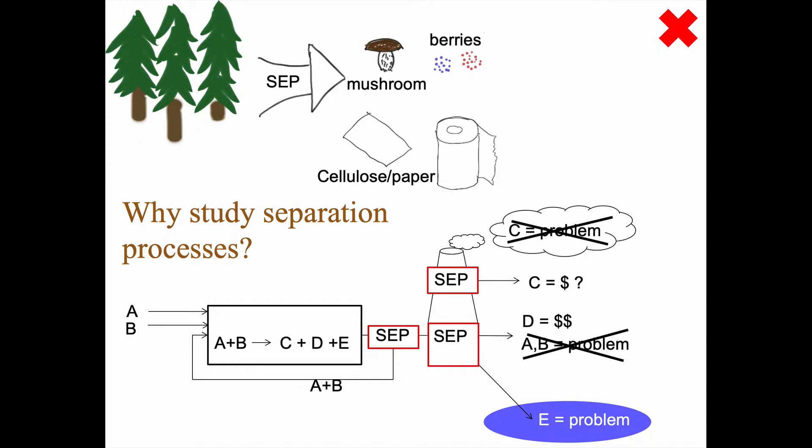Or we could separate out C from the air effluent, the gases effluent. And maybe we can even sell that. And perhaps we can do the same thing with E. So instead of having just one product, we now have three different products. So that might be one case.